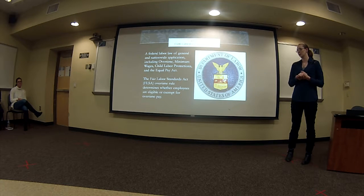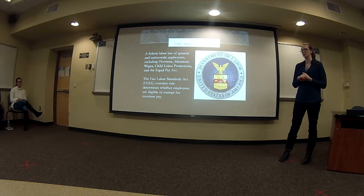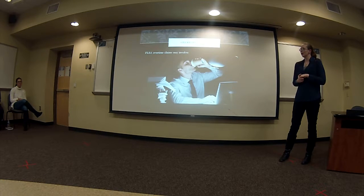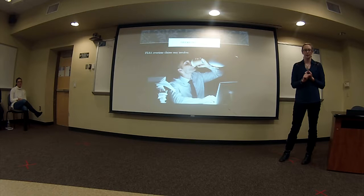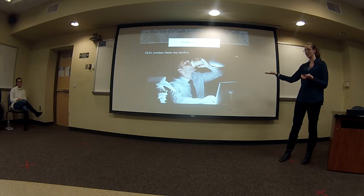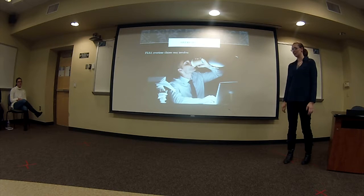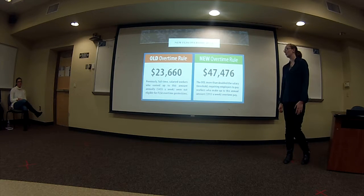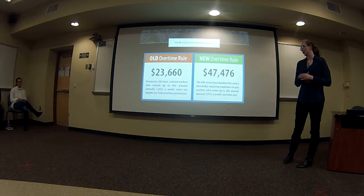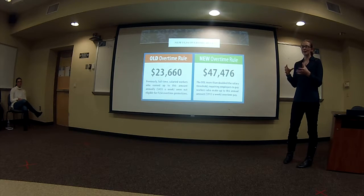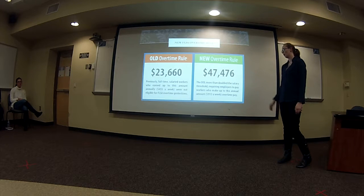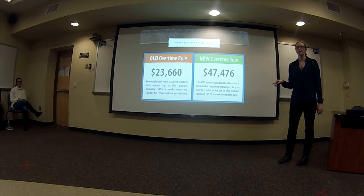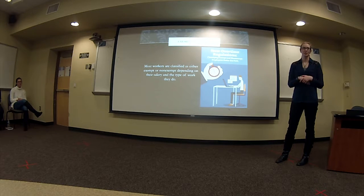The overtime rule determines whether employees are eligible or exempt for overtime pay. Some overtime claims arise from miscalculating overtime or not accounting for off-the-clock work. They changed the rule so now if you're making less than $913 a week, they need to pay you overtime to meet that requirement. This was supposed to take effect December 1st, but it's currently on hold as federal judges are reviewing it.